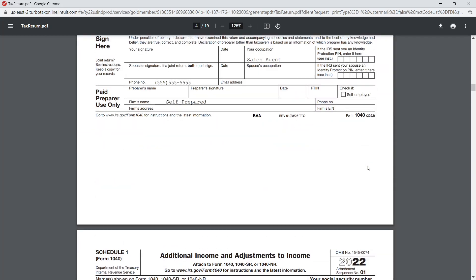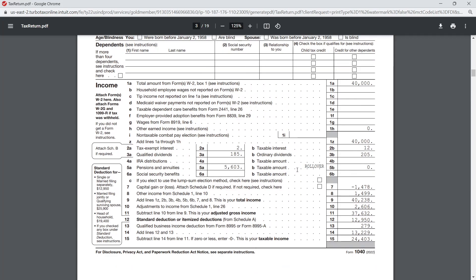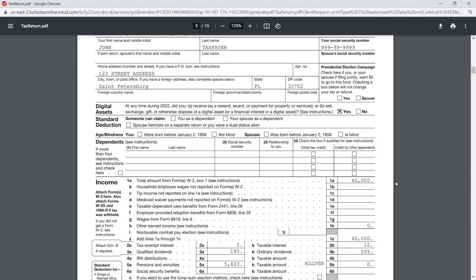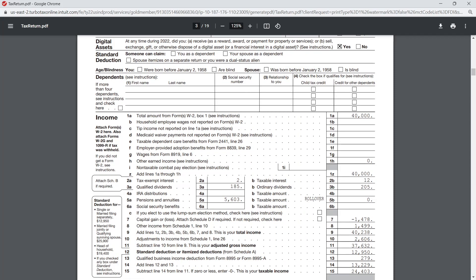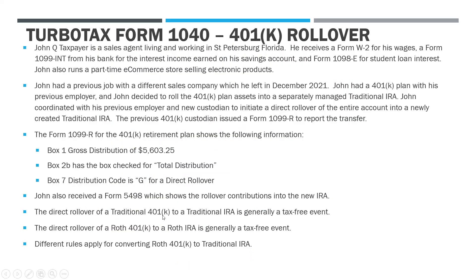We've entered the distribution, correctly noted it was a rollover — $5,600 rolled over, zero taxable. Now remember: if you have rollovers of traditional to Roth or Roth to traditional, there could be a tax impact because you're changing the character of the retirement account. But traditional 401k to traditional IRA is generally a tax-free event with zero impact in the year it happens. The same applies with a direct rollover of a Roth 401k to a Roth IRA — also tax-neutral. Different rules apply when moving between different categories. That covers it for this video — leave a comment below if you have any questions.